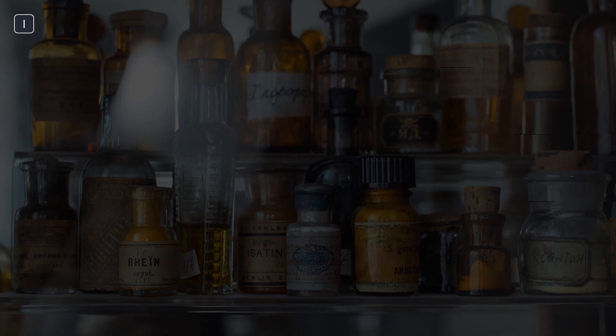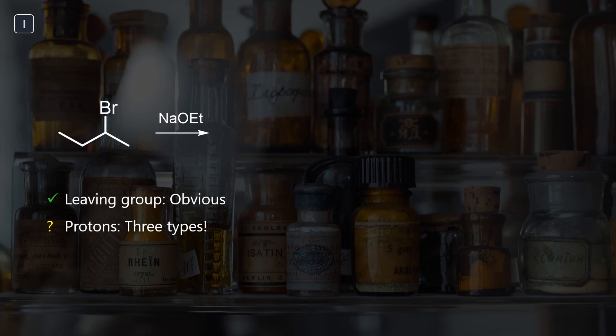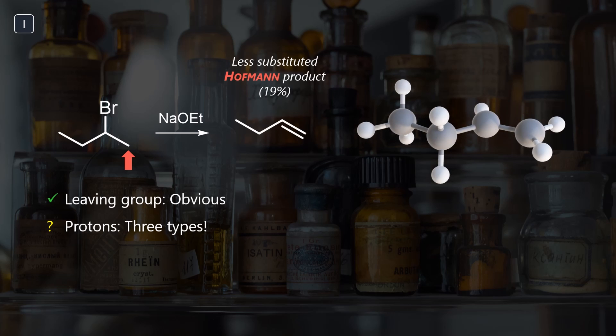Let's look at the simple elimination of 2-bromobutane with base. The bromide will obviously eliminate, but three types of protons are eligible. First up, the terminal CH3 group is most accessible. Because our base is not sterically hindered, this kinetic product forms in only 20%.